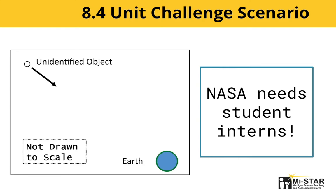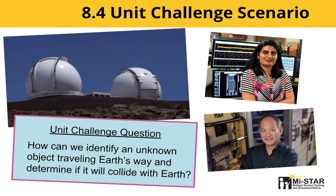The 8.4 unit challenge scenario is centered around an unidentified object moving through space and headed this way. Will there be a catastrophic collision between the object and Earth? Working with a fictional NASA team, students will act as interns as they learn how scientists and engineers find and identify unknown space objects, learn about their trajectory, and assess potential danger to Earth. This challenge is, as always, introduced in Lesson 1.